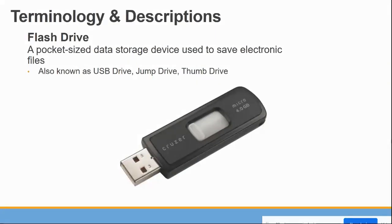Another place to back up data or store things is on a flash drive — also known as a USB drive, jump drive, or thumb drive. There are quite a few different names for this pocket-sized data storage device used to save electronic files. You can put a program on there too. It's essentially a chance to take things you'd normally have on your internal hard drive and move them to something portable that you can take to another computer.